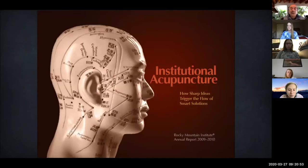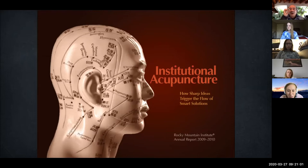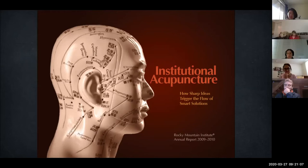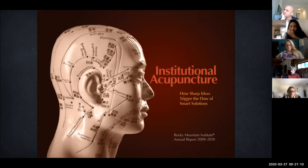We do institutional acupuncture — where the business logic is congested, we insert metaphorical needles into carefully chosen points in complex organizations or relationships, to get this chi, this vital entrepreneurial energy, flowing properly in the channels and directions that it already naturally follows.